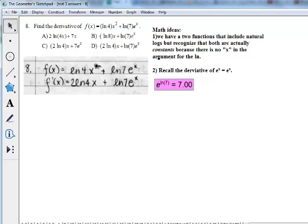So the derivative is 2, bringing down this power, times ln 4, x to the 1, plus ln of 7 is the constant times e to the x, because the derivative of e to the x is e to the x.